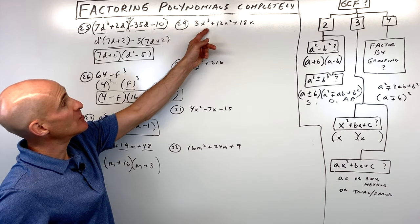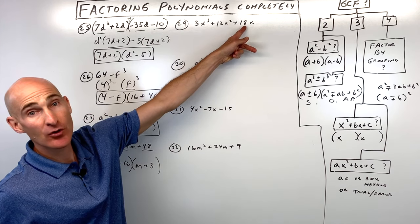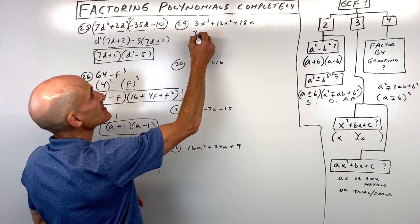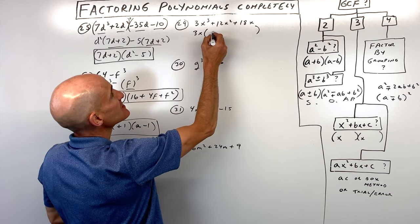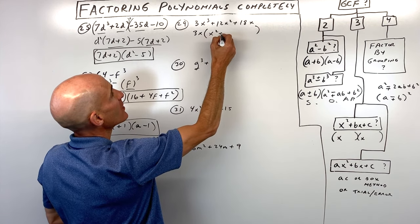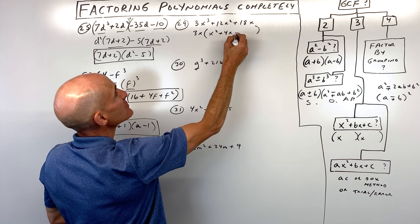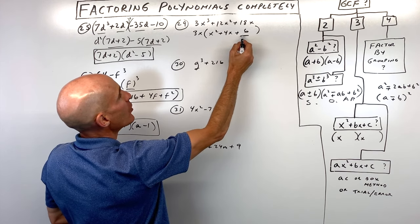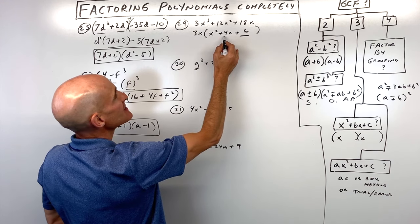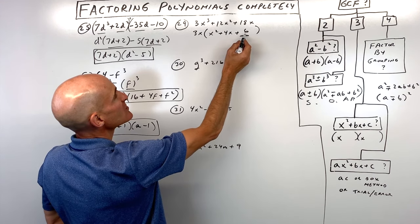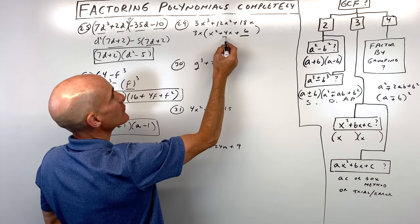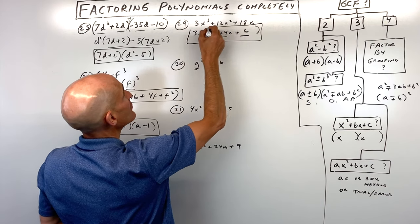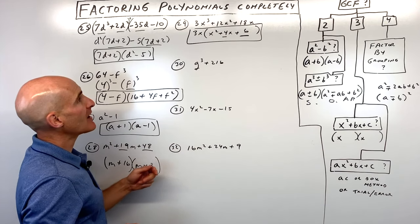Number twenty-nine has a greatest common factor of 3x. Factoring that out gives 3x times x squared plus 4x plus 6. Is there anything that multiplies to 6 but adds to 4? No, so that's as far as we can go — just the greatest common factor.